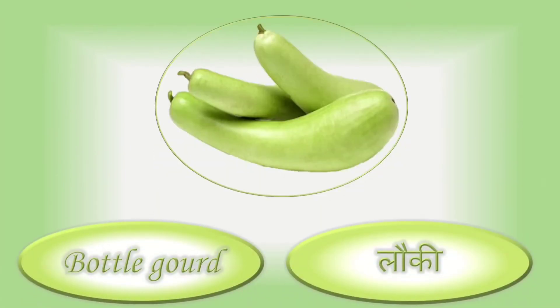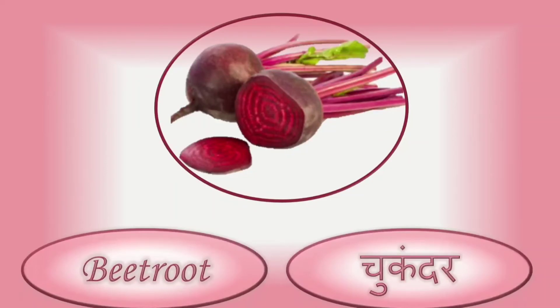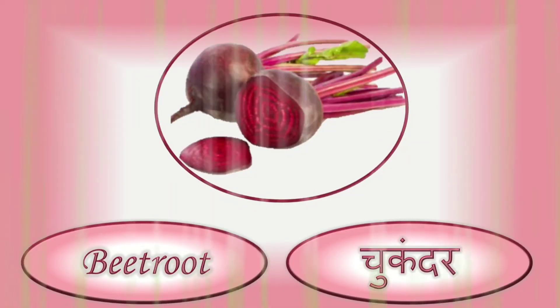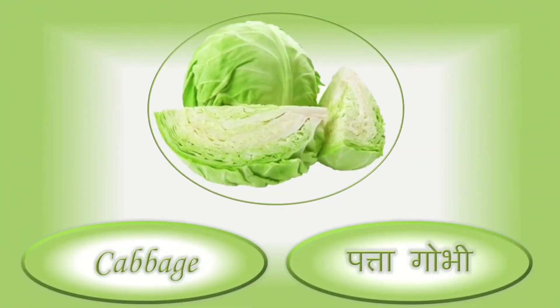Bottle gourd — bottle gourd means lauki. Beetroot — beetroot means chukundar. Cabbage — cabbage means patta gobhi.